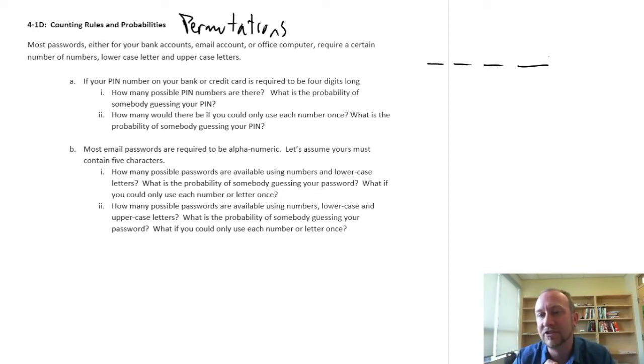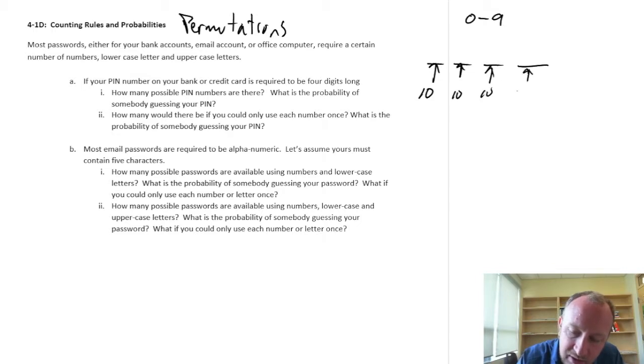So let's assume that I can choose between any value between zero and nine for my pin number. So that means that this value, this first digit, can take on any one of ten numbers. This one, any number of ten numbers, ten numbers here, ten numbers here. So each of these digits can be any one of ten values.